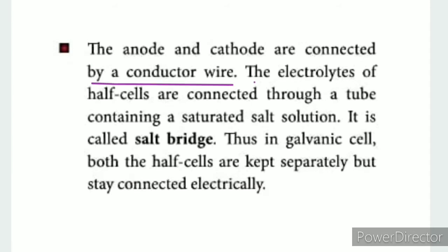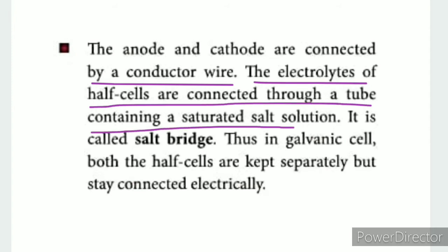The anode and cathode are connected by a conductor wire connected to a bulb. The electrolytes of the cells are connected through a tube containing a saturated salt solution — this is the salt bridge.